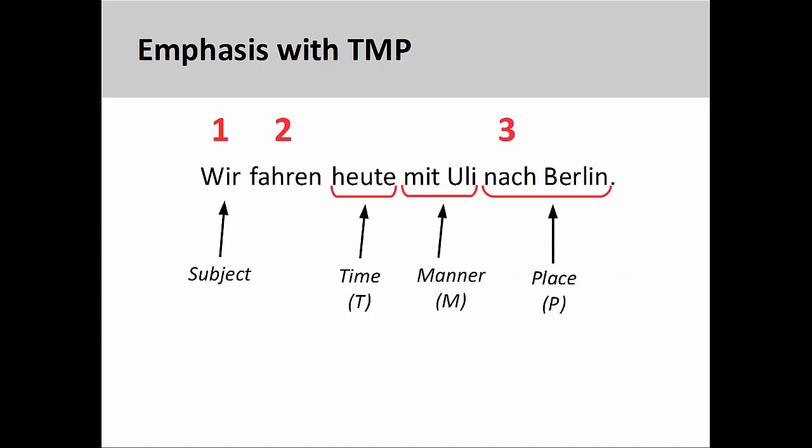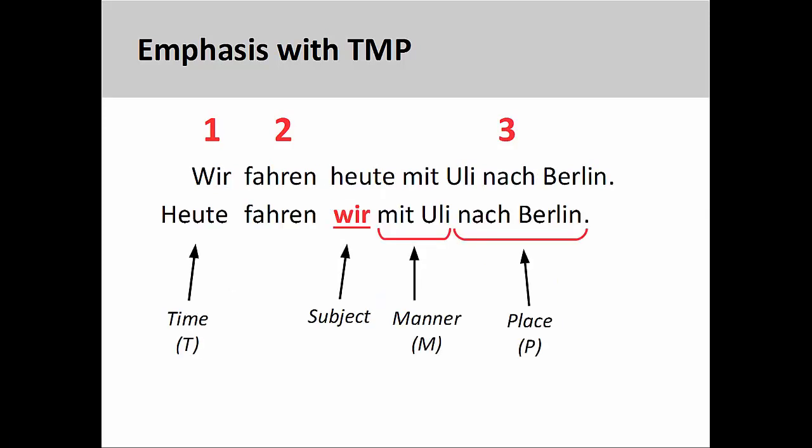German is more flexible than English in that the elements expressing time, manner, and place can be moved to the first position in the sentence in order to emphasize them. It is, for example, common to place the time element in the first position. When this occurs, the other manner and place elements remain in the third position in the regular order.